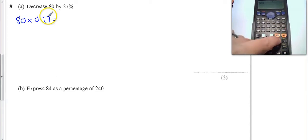So I'll do that in my calculator: 80 times 0.27, and then use the SD button equals 21.6. And then it says decrease it, so what I've got to do is then take that 21.6 off my 80, which is going to give me, well let's do 80 minus.